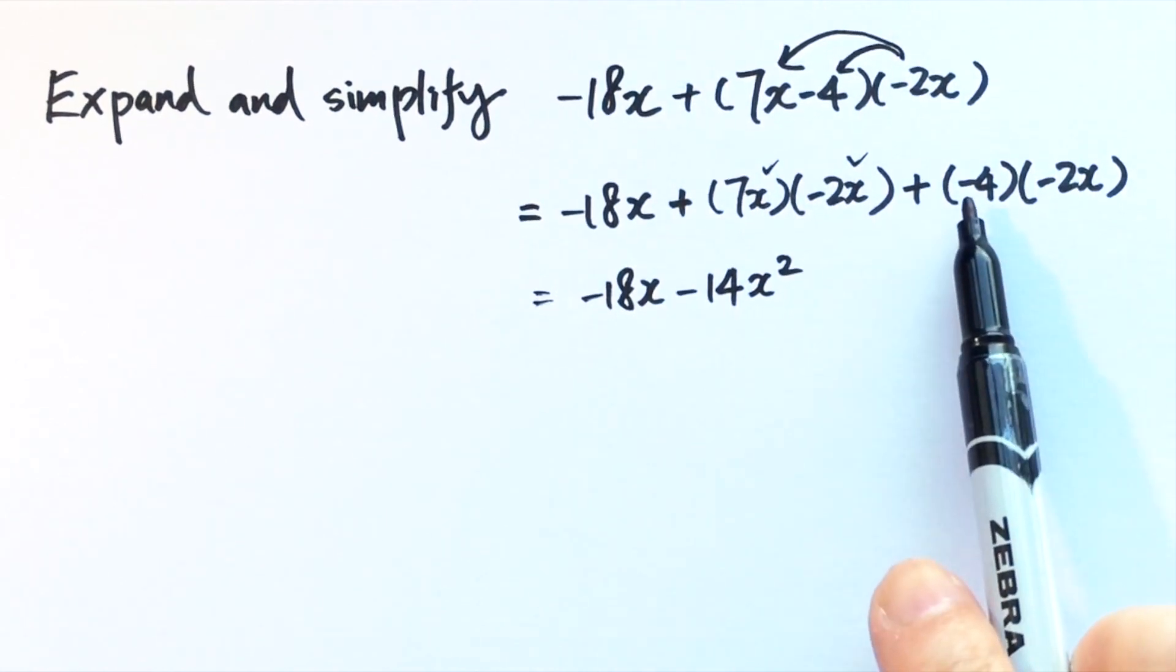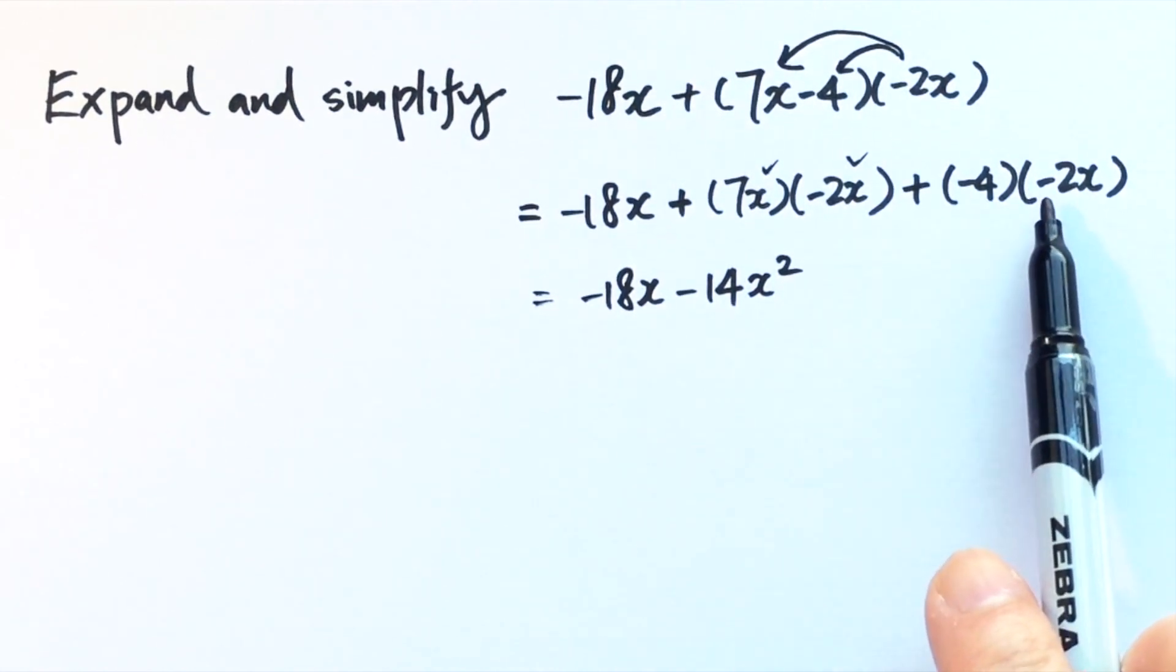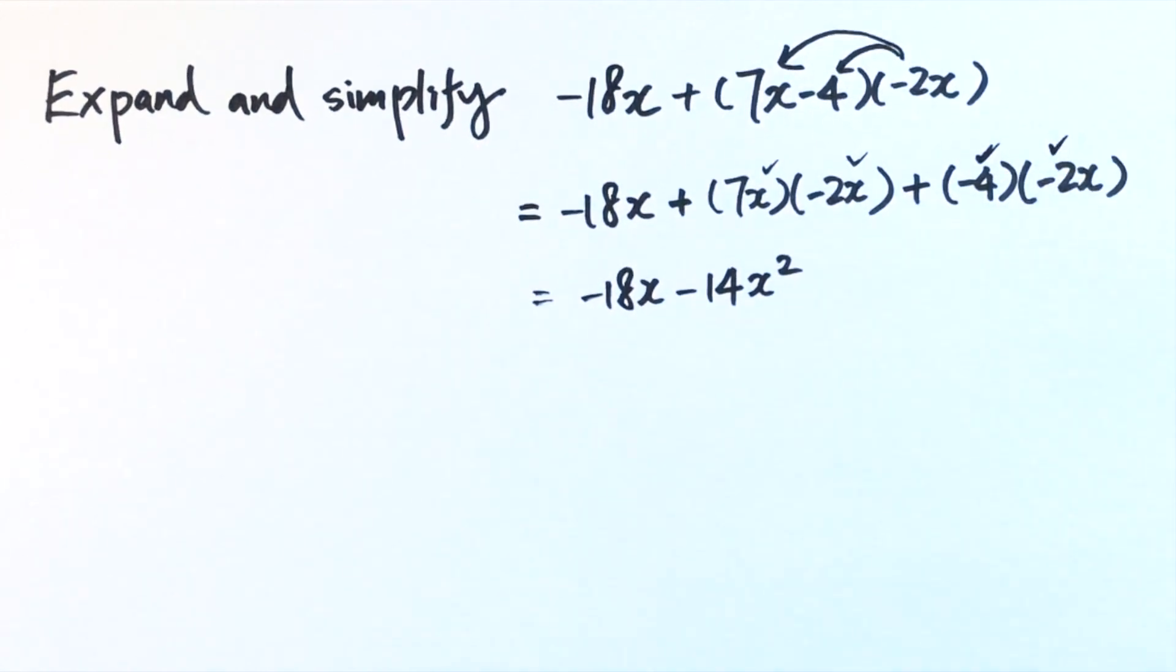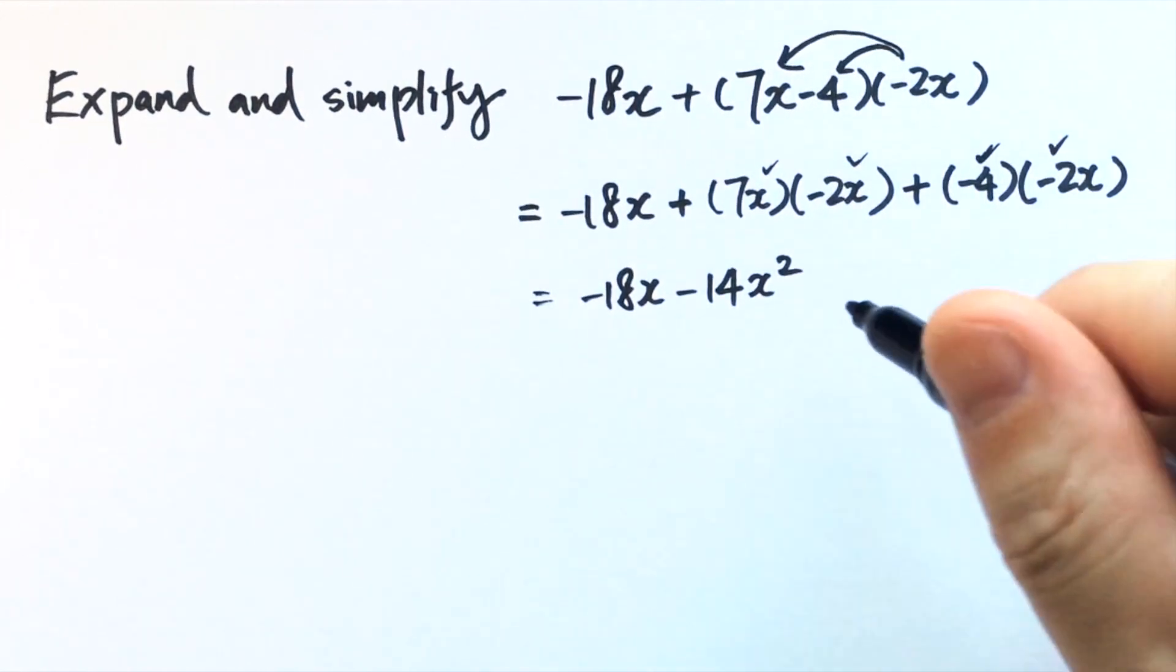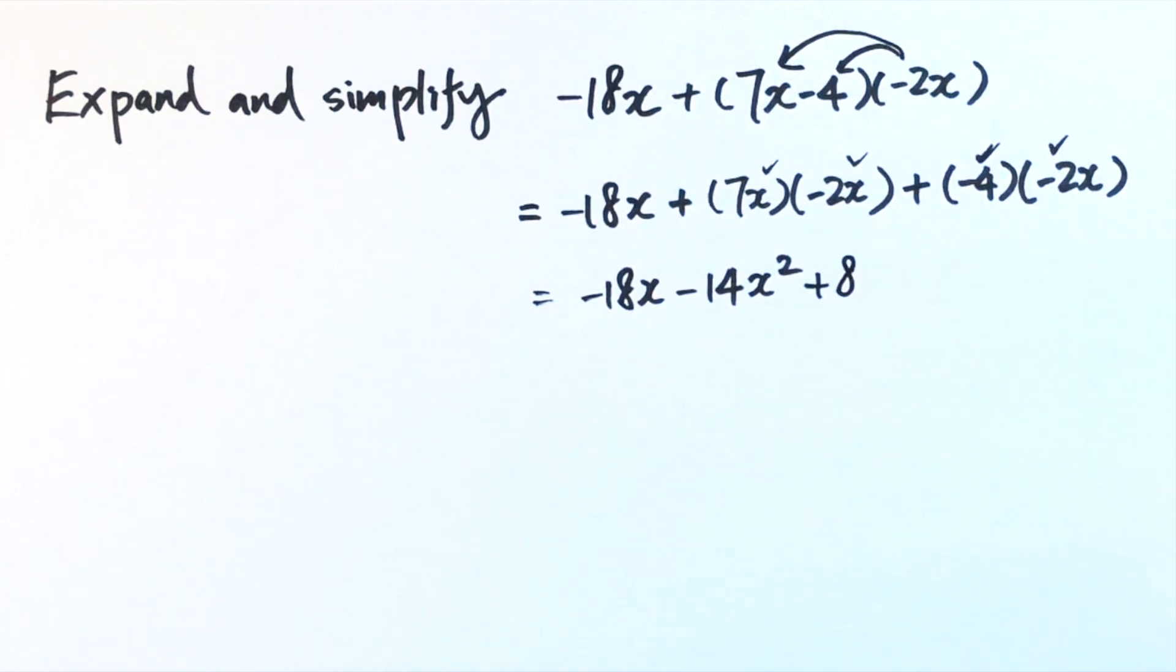And plus negative 4 times negative 2x. Negative 4 times negative 2 you get positive 8, plus 8, and we have an x here.